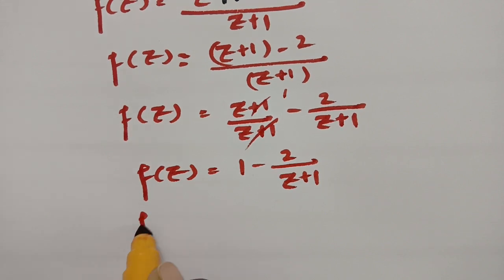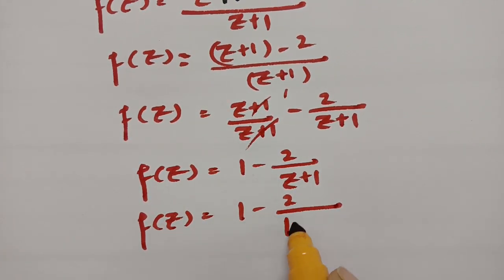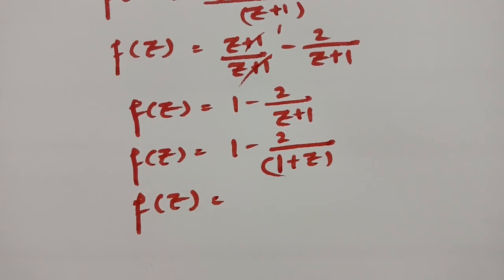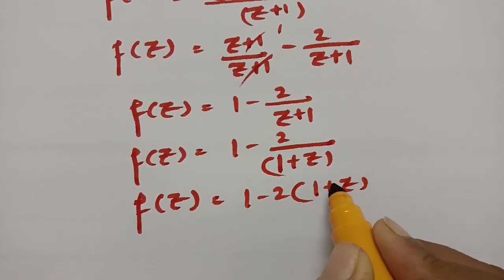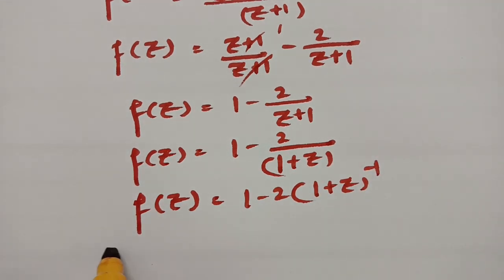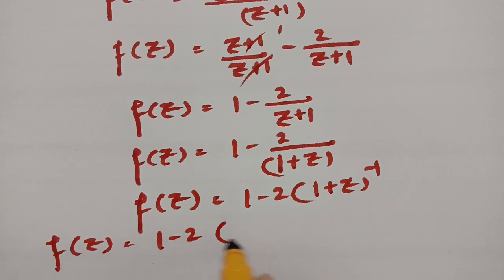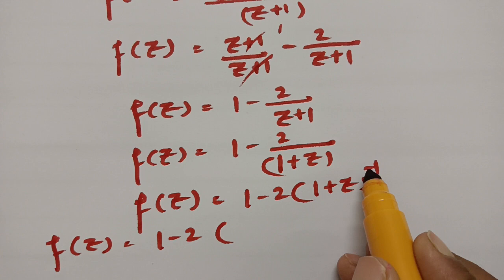And now f(z) = 1 minus 2 times of 1/(1+z). Writing (1+z) and f(z) is clearly 1 minus 2 times (1+z) whole inverse. So f(z) = 1 minus 2 times of, expanding using binomial expansion, this is plus and minus — alternate plus and minus.